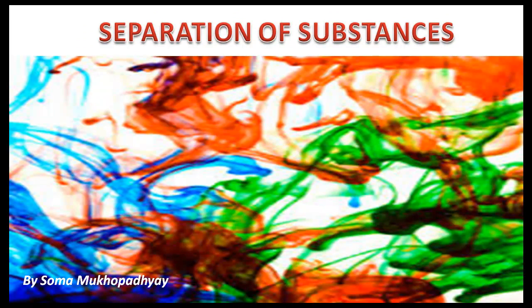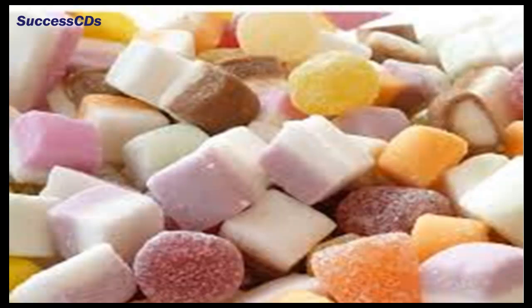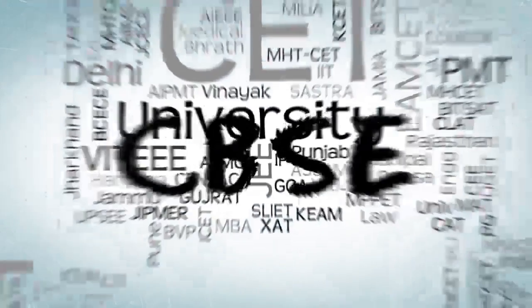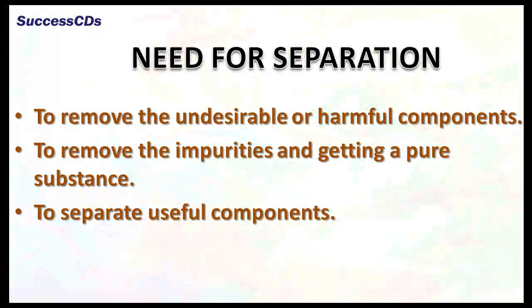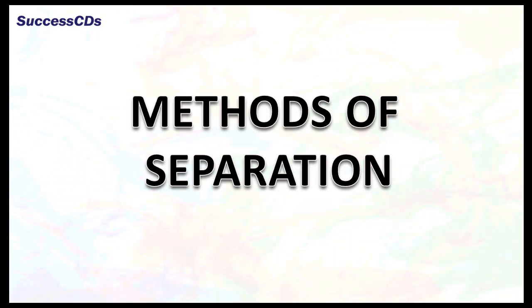In nature, very few substances occur in pure form; most substances are found mixed with other substances. Most of the time we need to separate the various components of a mixture in order to remove undesirable or harmful components, remove impurities, get a pure substance, or separate the useful components. The methods of separation will depend on the components of a mixture and their properties.